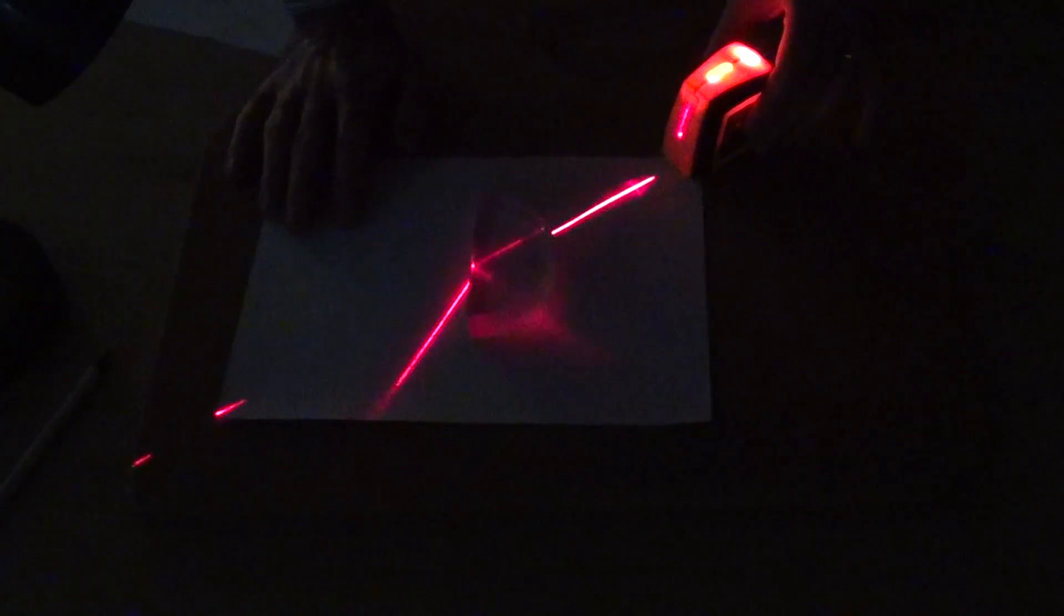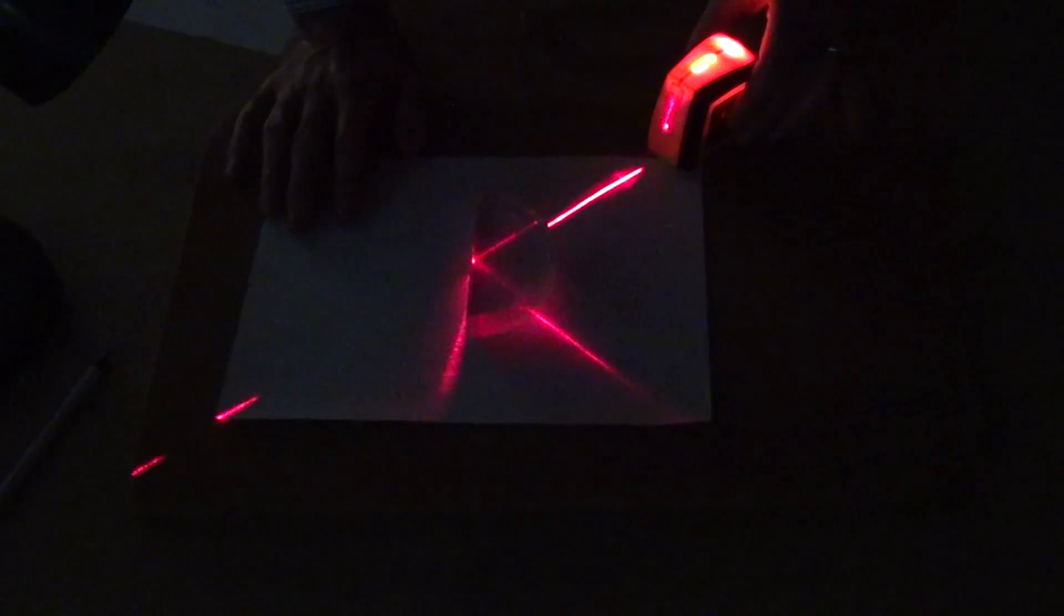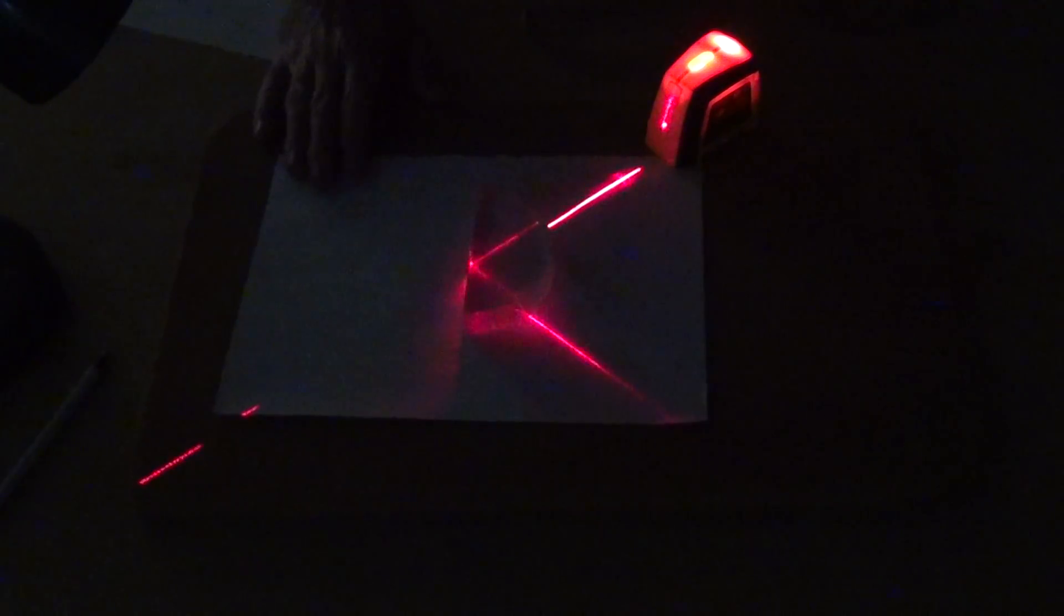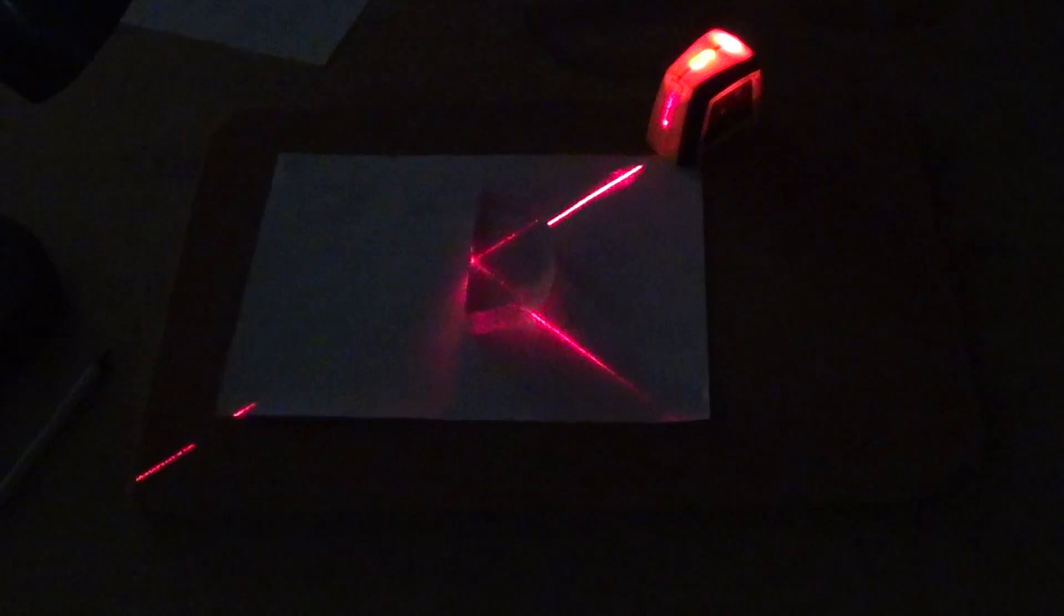And so, that point where that beam disappears is called total internal reflection. Have every member of the group measure that total internal reflection angle, average your angles, use that to calculate the index of refraction of your disc. That's good. Thank you.